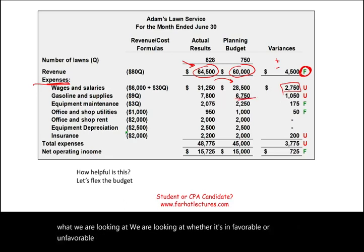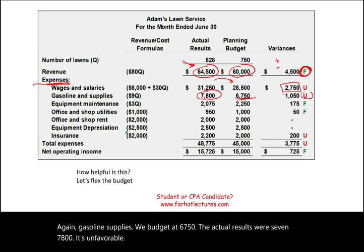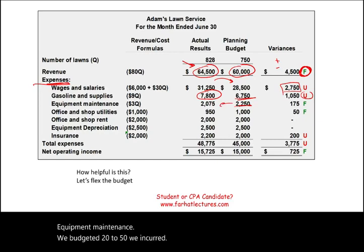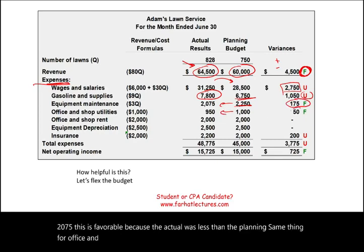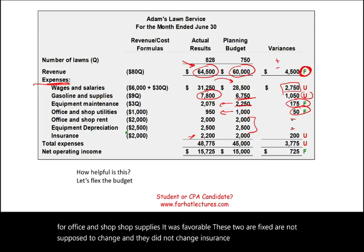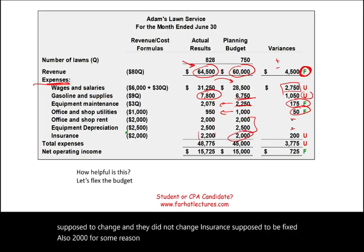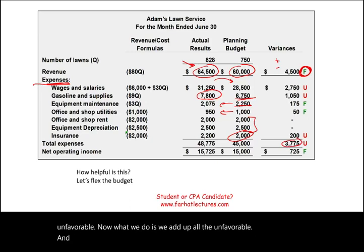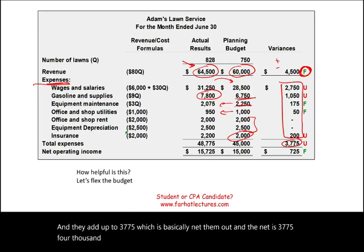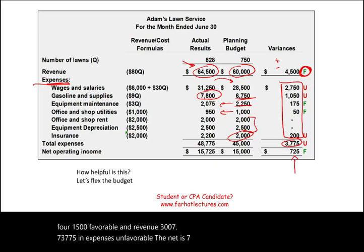Gasoline supplies: budgeted $6,750, actual $7,800 — unfavorable. Equipment maintenance: budgeted $2,250, actual $2,075 — favorable. Office and shop supplies: favorable. Insurance increased by 10% — unfavorable. Adding up all unfavorable variances gives $3,775. Netting revenue of $4,500 favorable against $3,775 unfavorable in expenses, the net is $725 favorable. But this analysis doesn't help us much.